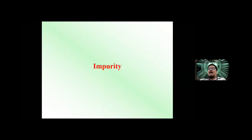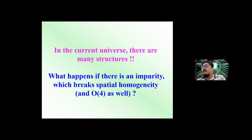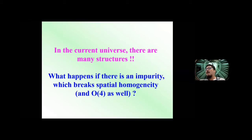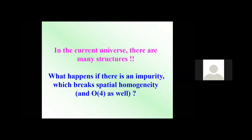Now let's move on to the effect of impurities on the tunneling rate. As I mentioned, in the current universe there are many structures and our universe is not homogeneous nor isotropic. So what happens if there is an impurity that breaks spatial homogeneity and O(4) symmetry? This is the question. People are now trying to answer it. For example, we have black holes as such an impurity or bubble nucleation site.